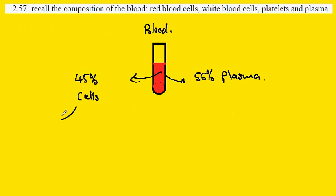Of the cells, the types that we have are the red blood cells, known as erythrocytes, and the white blood cells.